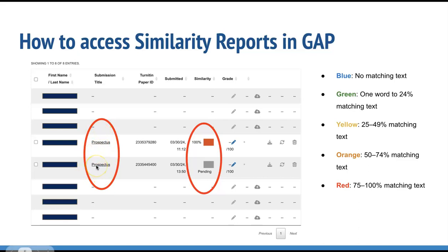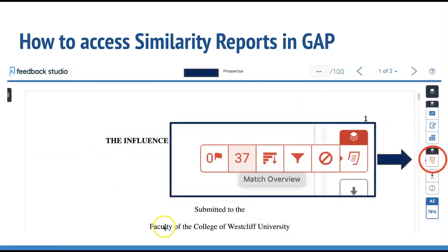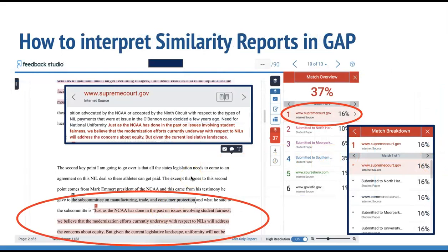To select the similarity report you wish to view, simply click the paper title in the submission title column. To view the match overview for the paper that you're reviewing, click the red numerical similarity score from the similarity toolbar. If you're unable to see this menu on the right-hand side of your Turnitin display, simply click the red paper icon, and this will pop out the dynamic menu to the left that allows you to click the similarity score in order to see the match overview. When you click the similarity score, a list of matches and their corresponding percentages displays on the right of the screen. Clicking each source reveals a source box and brings you to the highlighted text within the student's paper matching that source.